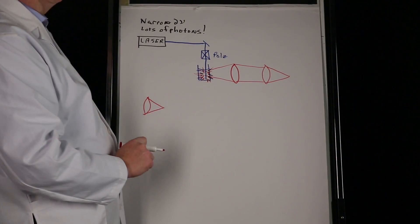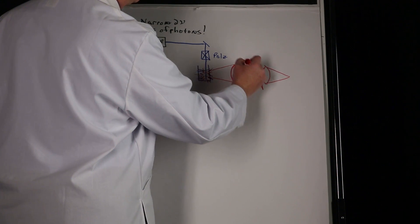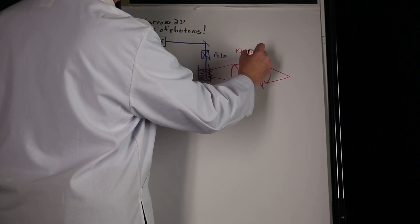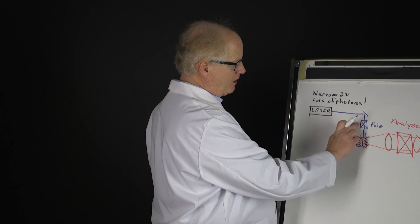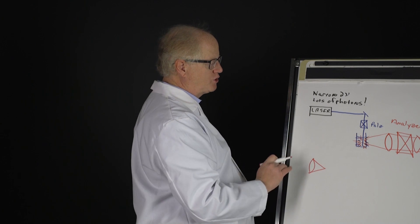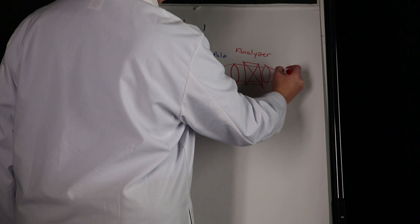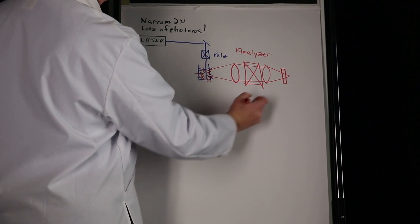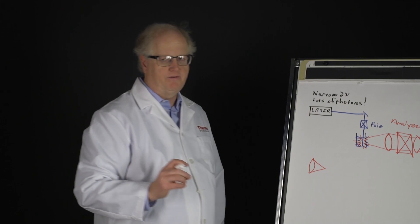But before I do, I need two things in here. The first thing I'm going to need is an analyzer. So I have in here an analyzer, which is a second polarizing element, which allows me to go VV, VH, HV, HH, whichever way I want to. I can now control my polarization. The other thing that I'm going to put in there, and this is frequently put just right in front of the entrance slit of the spectrometer, is my filter.